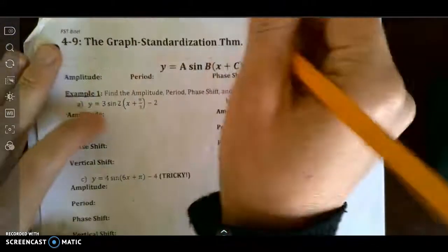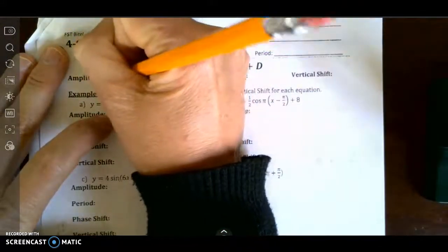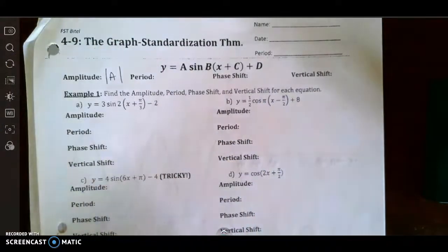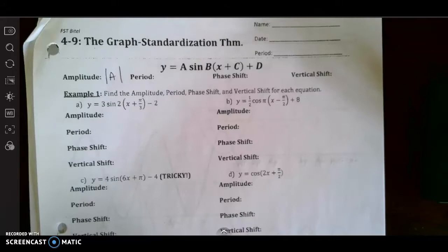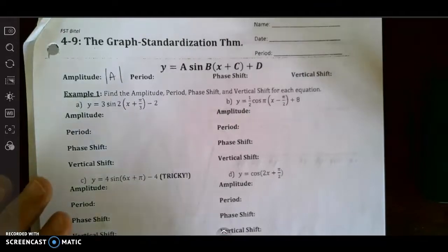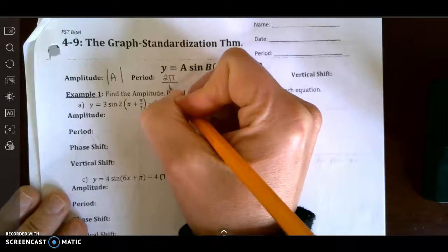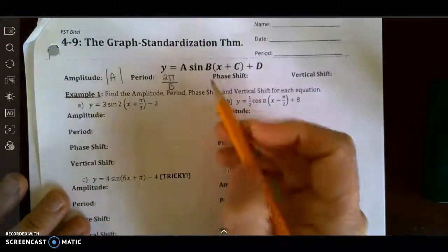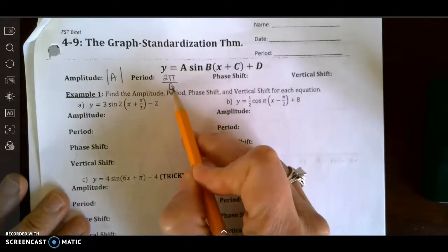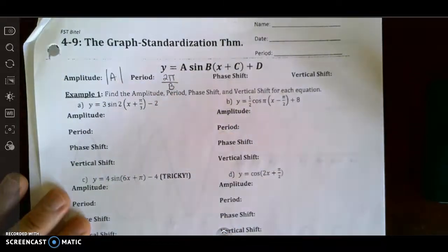The amplitude is always the absolute value of a, because amplitude is how far up or down from the axis it is, and since it's a distance, it's always positive. So even if the graph is flipped upside down, the actual amplitude is a positive number. The period is always found by taking 2π and dividing it by whatever the b value is — so 2π divided by b gives us the period.